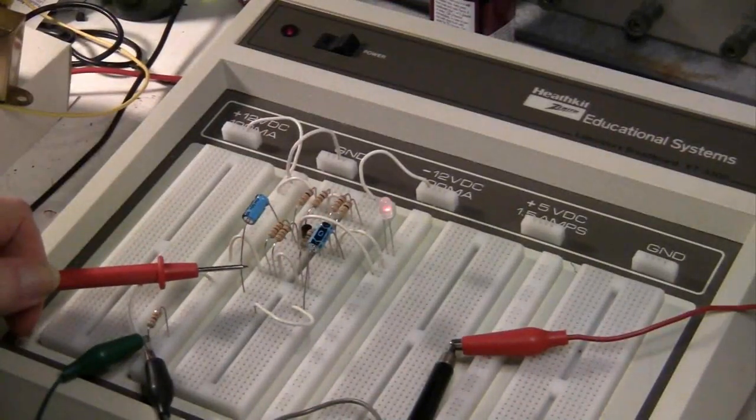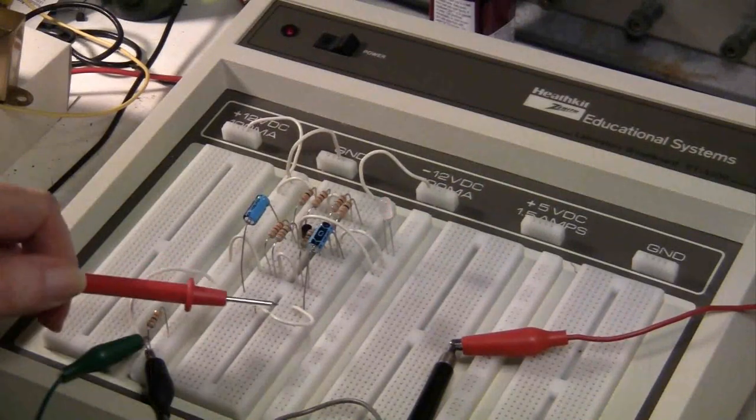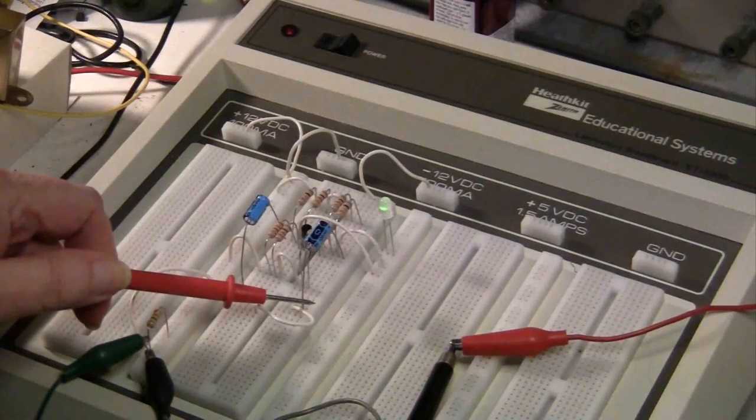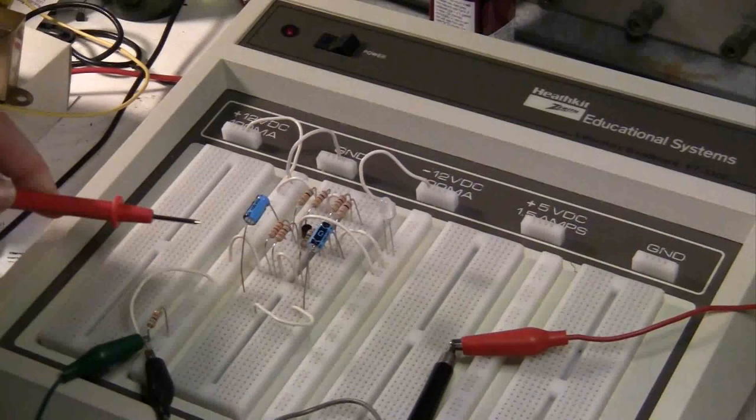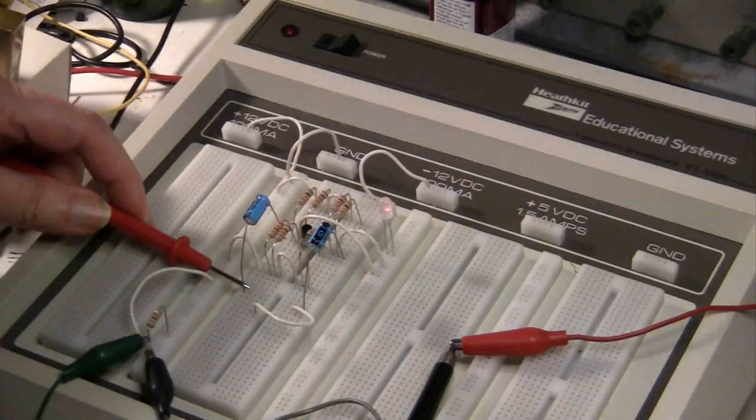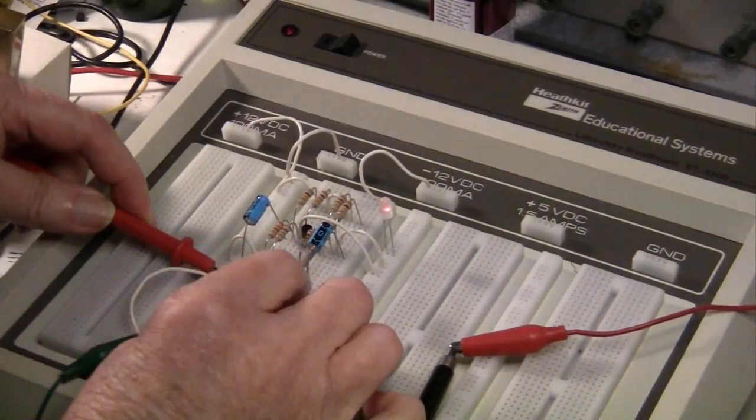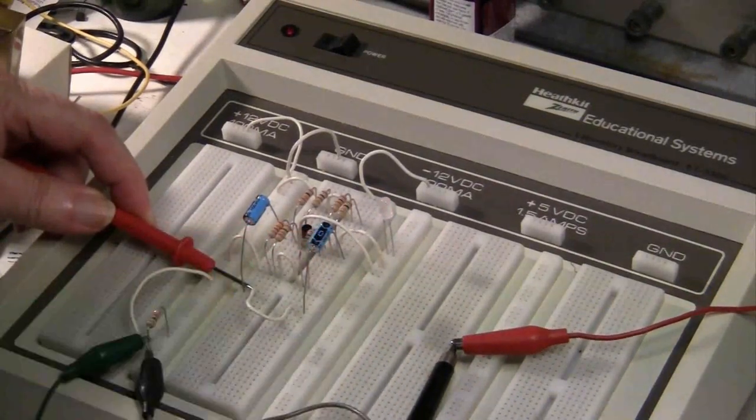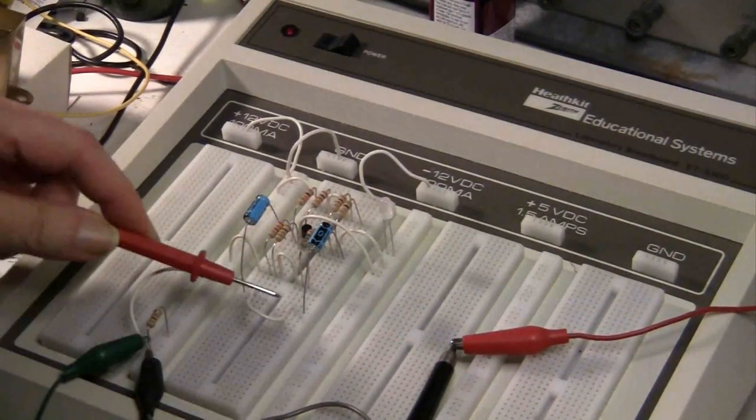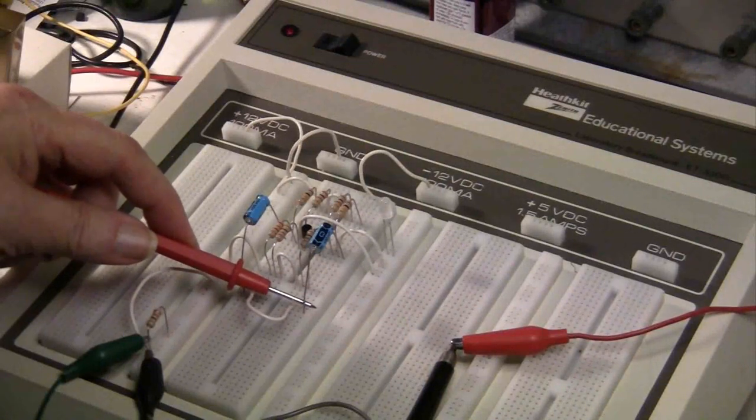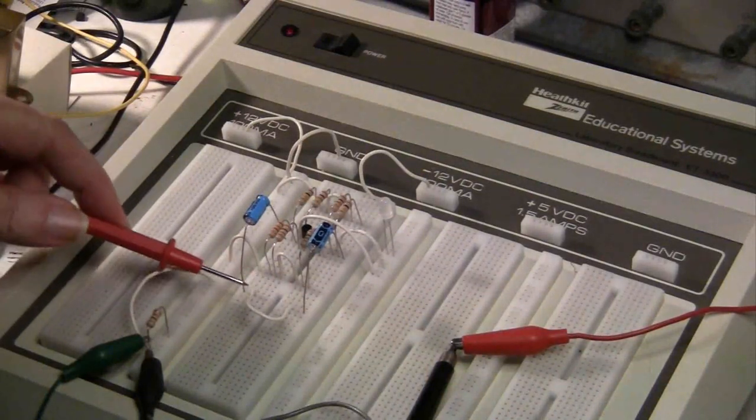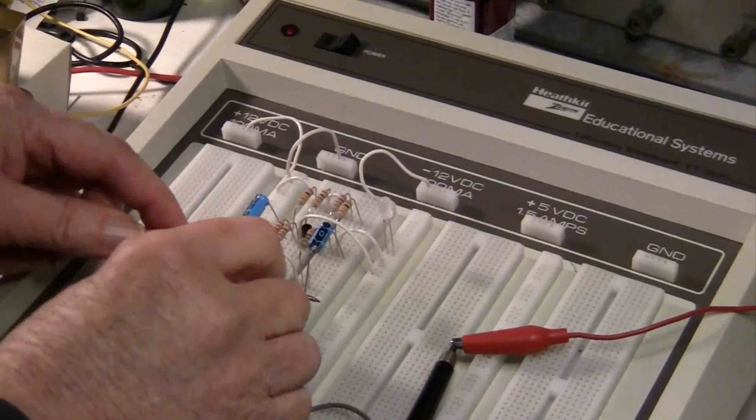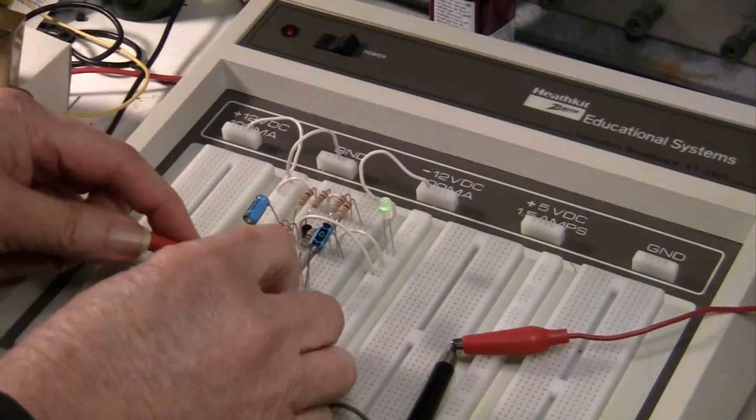Signal into 1, red. Signal into 2, green. Back to 1. And now I'm going to short between the two inputs. And look what happens. The LED goes out, even though I'm injecting a signal. Now I'm going to lift the short, and the green will light again.